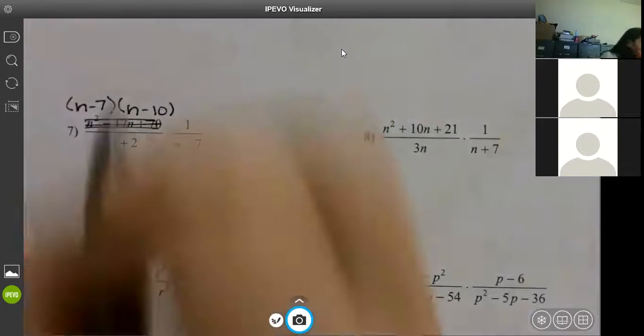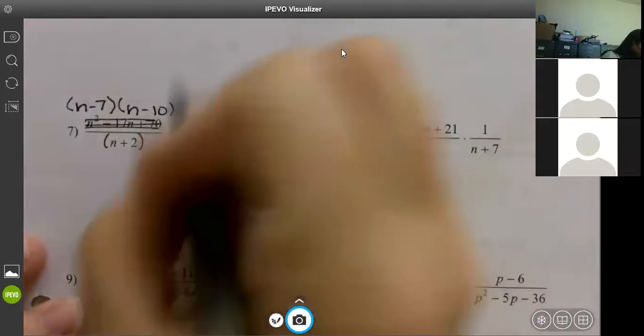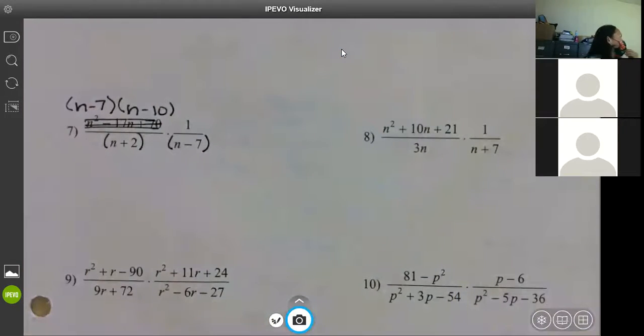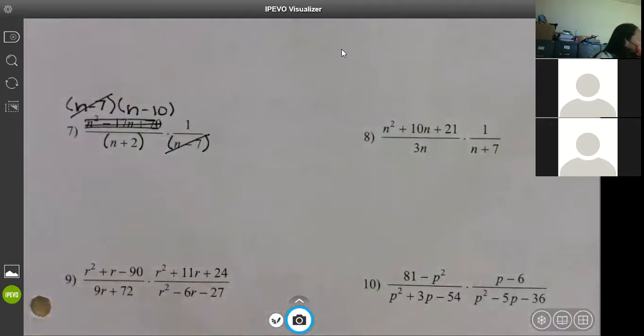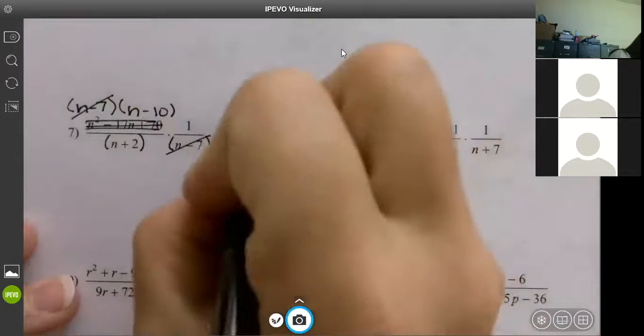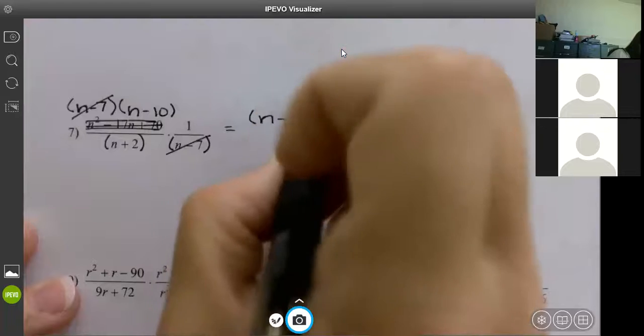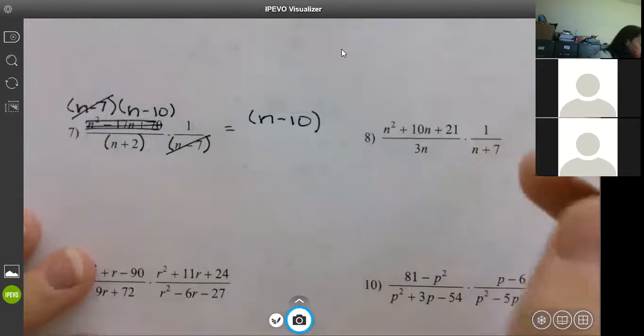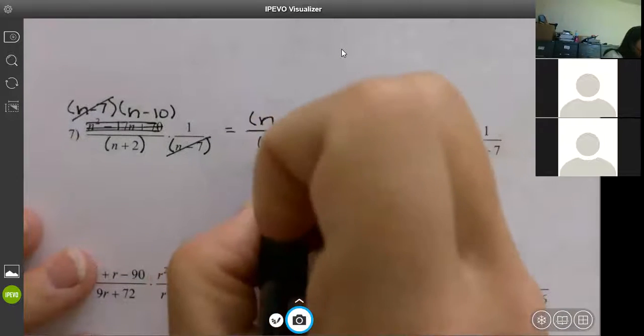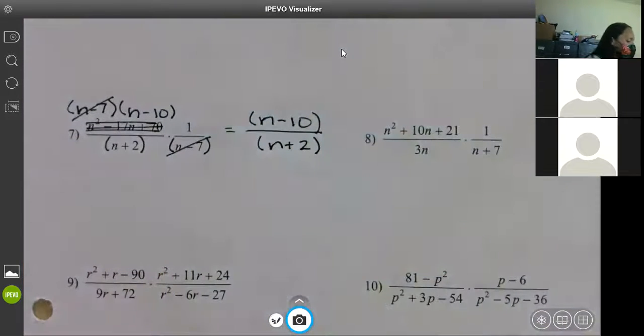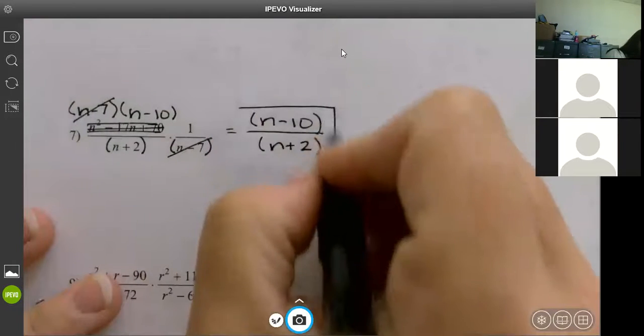I can't factor N plus two. I cannot factor one. I cannot factor N minus seven. So I just throw them in parentheses to remind me that they have to stay together. What can I mark out? N plus two. N minus seven. Anything else I can mark out? So what do I have left on the top? N minus 10. Do I have to put the one? No. On the bottom? N plus two. What's that cause? A vertical asymptote at negative two. Perfect. That's it, y'all. So it's the same exact thing we did yesterday. You just have two that you're working with.